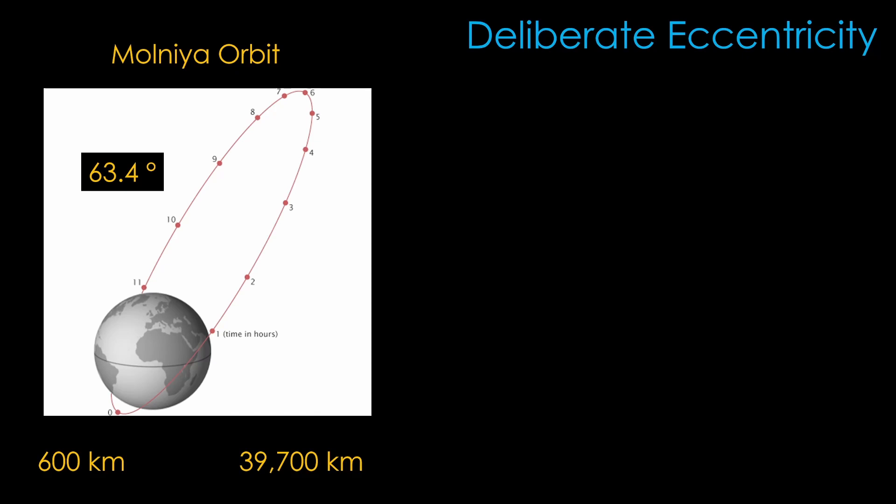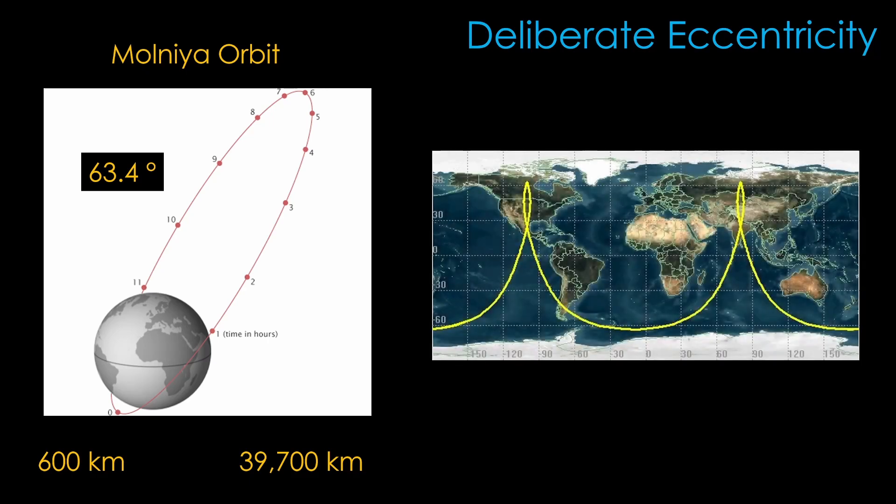Three satellites in this orbit can therefore provide continuous coverage. The ground track of this orbit is a bit weird. The satellite orbital period is 12 hours, so the ground track just alternates between two locations. Looking at the two locations, you can understand why both the Soviets/Russians and the US are fond of this orbit for reconnaissance satellites. One of the downsides of this orbit is that the satellite will need to be designed to deal with the high radiation of the Van Allen belts every orbit.